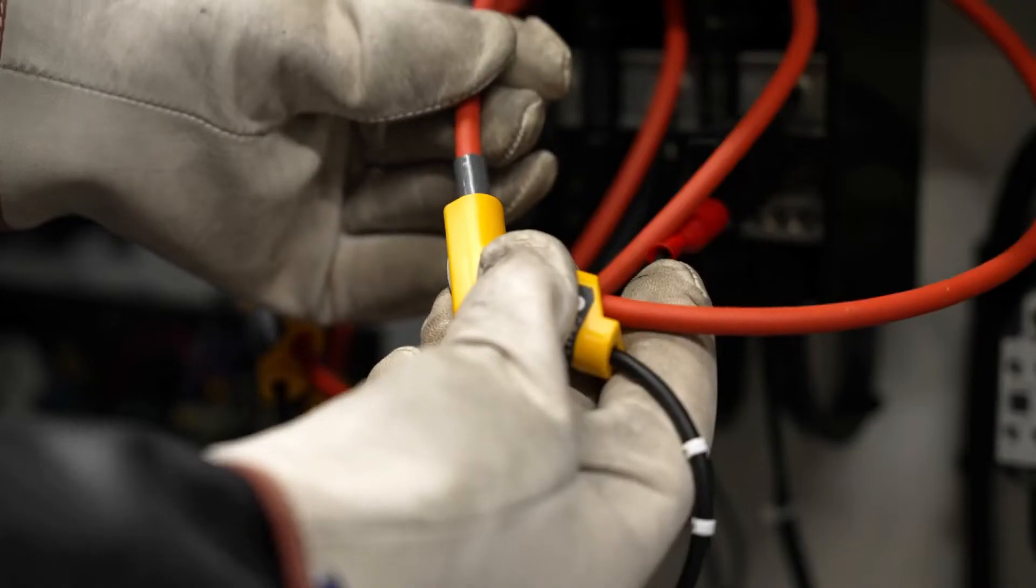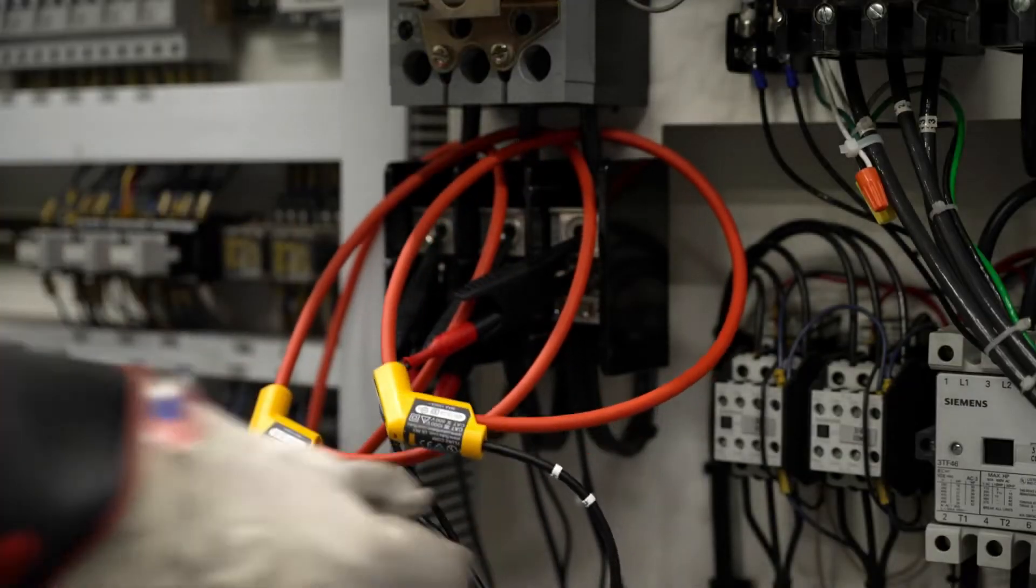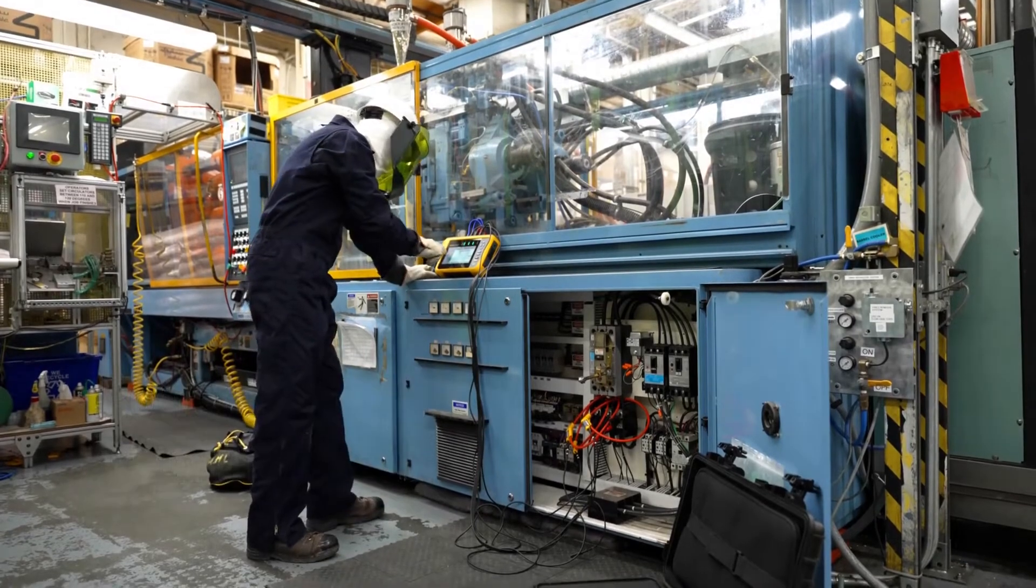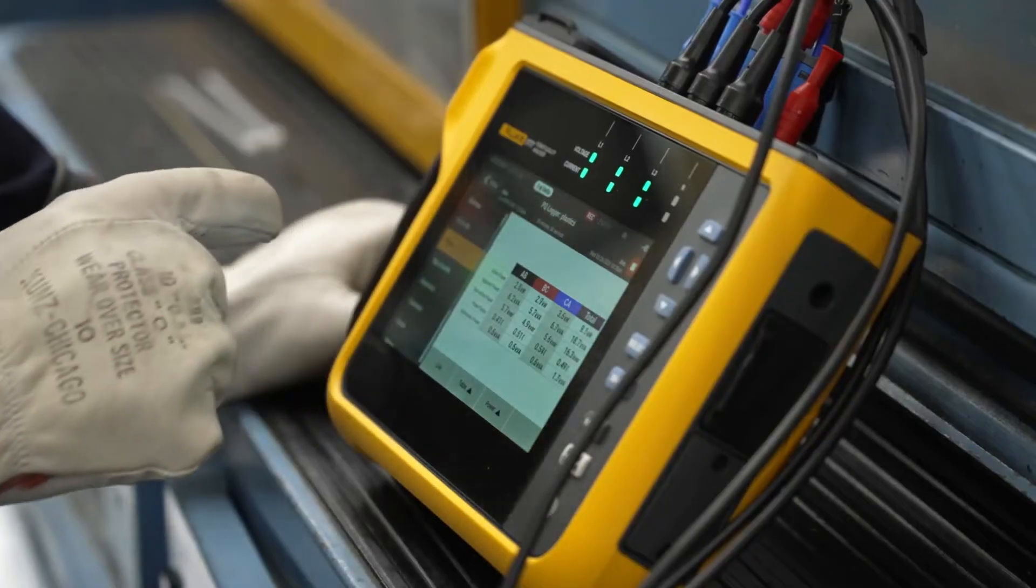The Fluke 1770 Series conveniently powers directly from the circuit you are measuring, so you won't need an electrical outlet or have to worry about failing batteries.